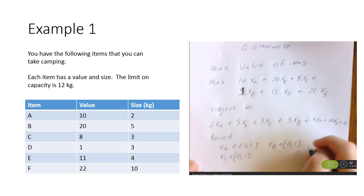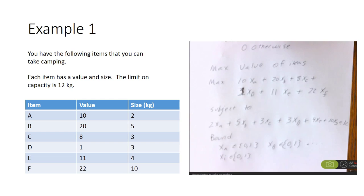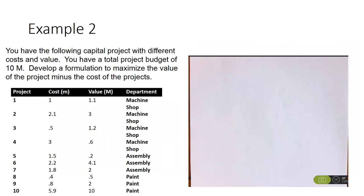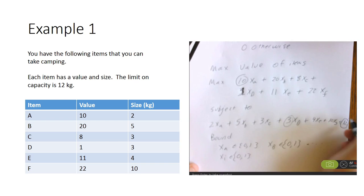That's the basic knapsack problem. You can see how the values from the table are translated into the problem: the coefficients on value, coefficients on size, and finally the total capacity of the knapsack.